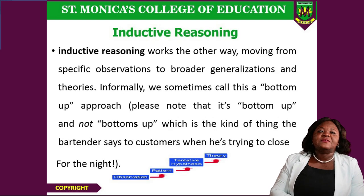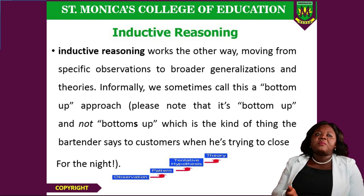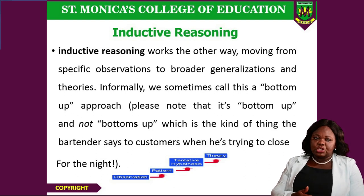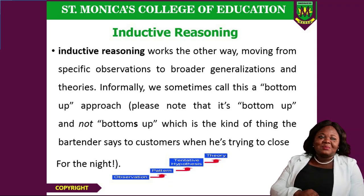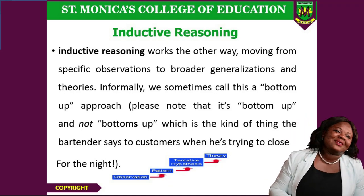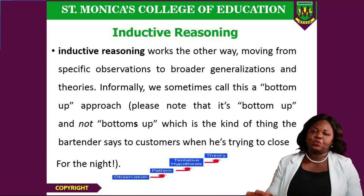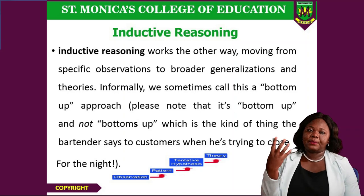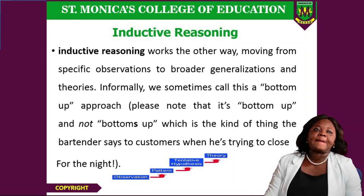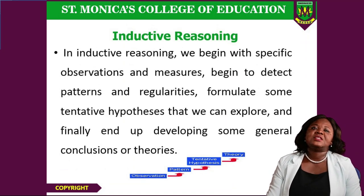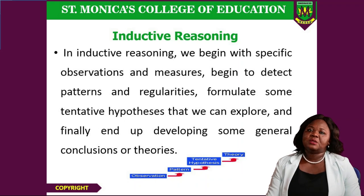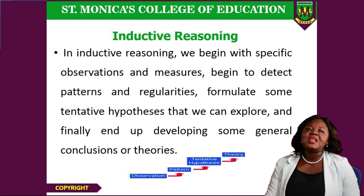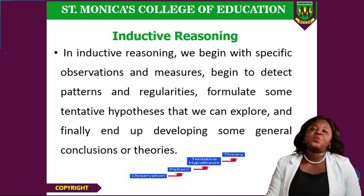When you come to inductive reasoning, it works the other way — you move from specific observations to broader generalizations and theories. This is sometimes called the bottom-up approach. Inductive reasoning begins with specific observations and measures, detects patterns and regularities, formulates some tentative hypothesis to explore, and finally ends up developing some general conclusions or theories.